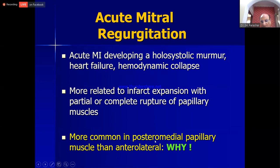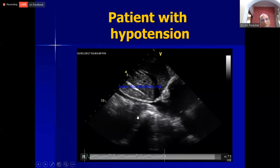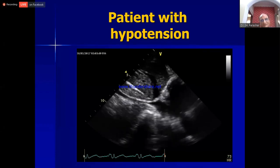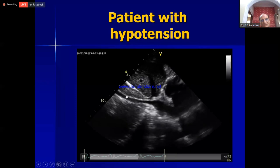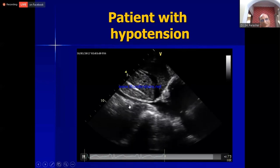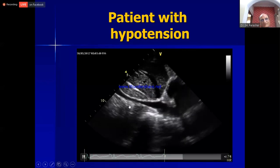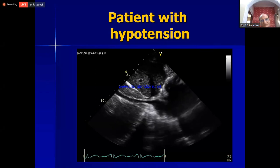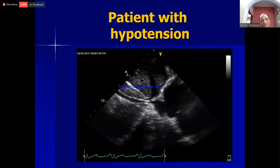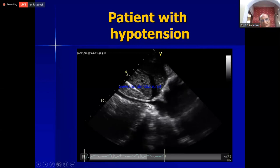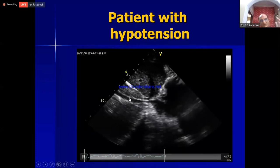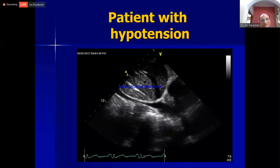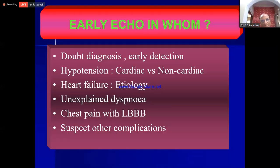Whenever an acute MI develops a holosystolic murmur, think of papillary muscle rupture. It is more common in the posterior medial papillary muscle because it has a single arterial supply, while the anterior lateral papillary muscle has a double arterial supply. Additionally, when a patient presents with hypotension and the IVC is completely collapsed at only 4–5mm, this indicates marked hypovolemic hypotension. Always check the IVC and filling pressure when doing an emergency echo.